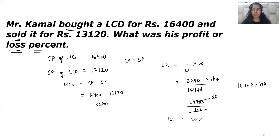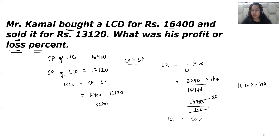To summarize: first we write the values — they give you the CP and the SP. Then we find that cost price is greater than selling price, which means a loss is incurred. We apply the formula CP minus SP to find the value of loss, which is 3,280. Then we put that value into the loss percentage formula — loss over CP multiplied by 100 — giving us a loss of 20 percent.